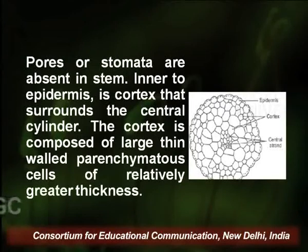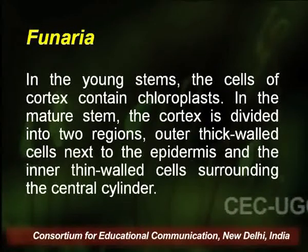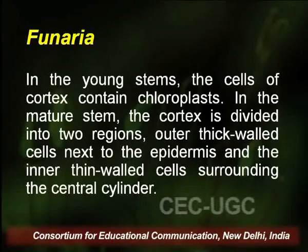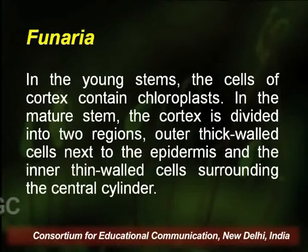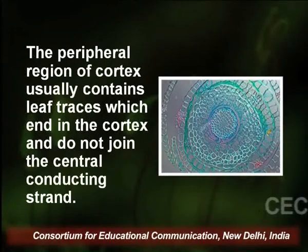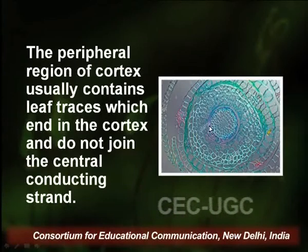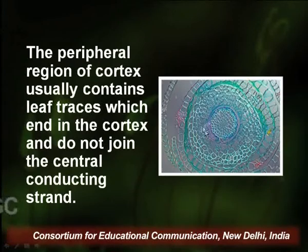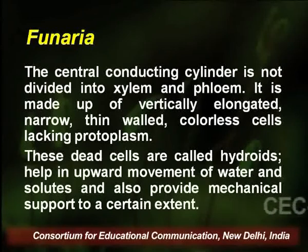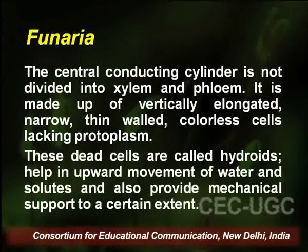The cortex is composed of large thin-walled parenchymatous cells. In young stems the cortex cells contain chloroplasts; in the mature stem the cortex is divided into outer thick-walled cells next to the epidermis and inner thin-walled cells surrounding the cylinder. The peripheral region of the cortex contains leaf traces which end in the cortex and do not join the central conducting strand.